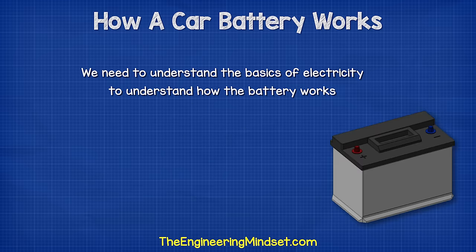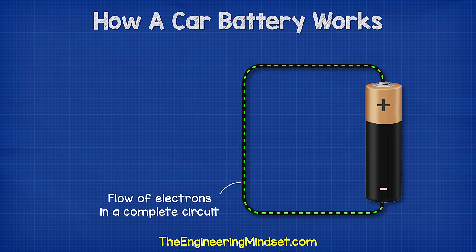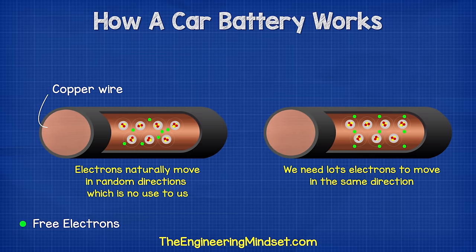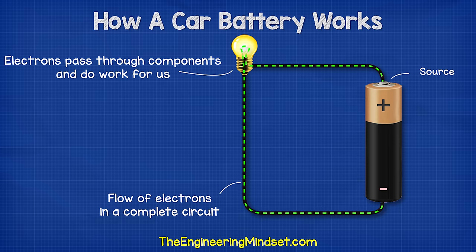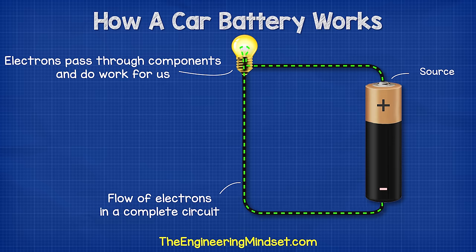I want to quickly recap on the fundamentals of electricity so that you understand the next part of how the battery works. Electricity is the flow of electrons in a circuit. We need lots of electrons to flow in the same direction through a wire so that we can place things in the path of the electrons, such as light bulbs. As they pass through, they will produce light.